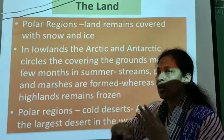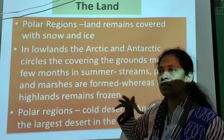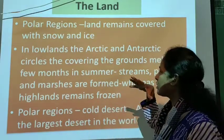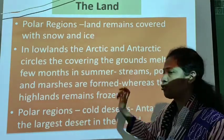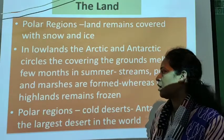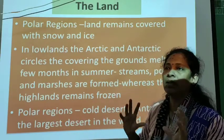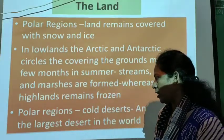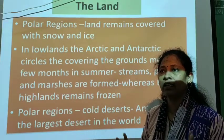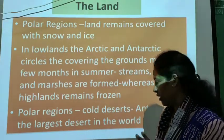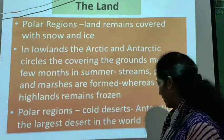In the lowlands near the Arctic Circle, snow starts melting and forms small streams and pools. But the highlands near the north and south poles remain in a frozen form. I also told you about the polar desert — Antarctica is the largest cold desert in the world, and the south pole is totally covered with the continent that is Antarctica.